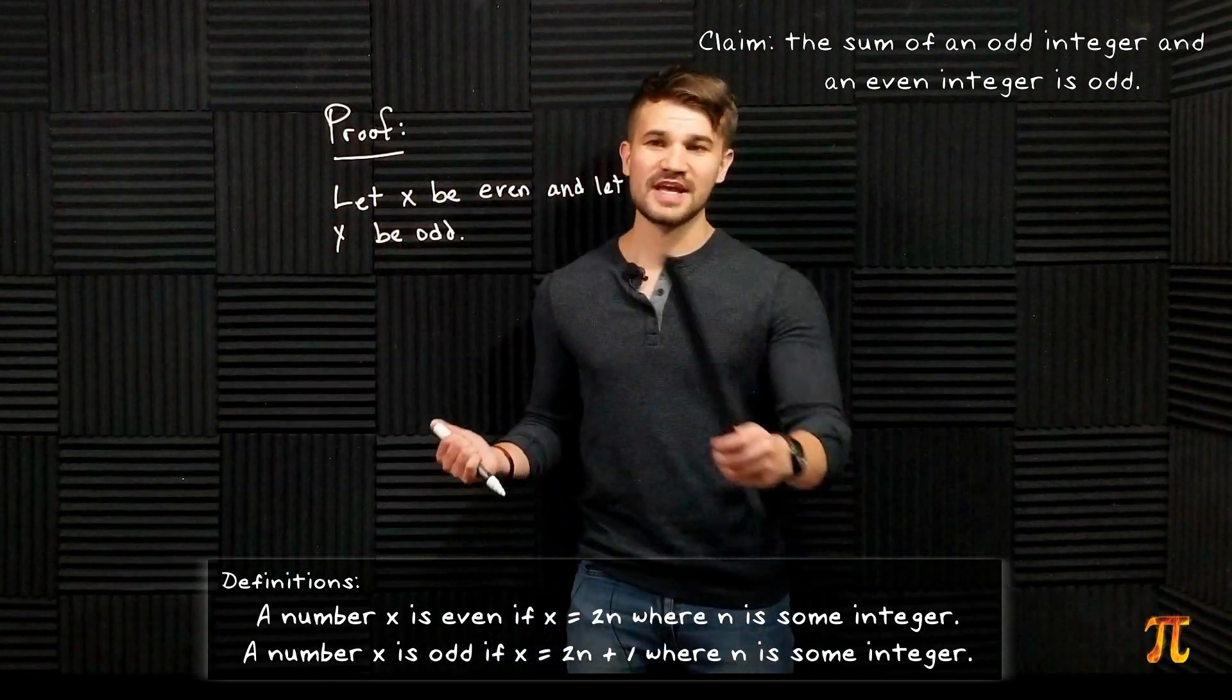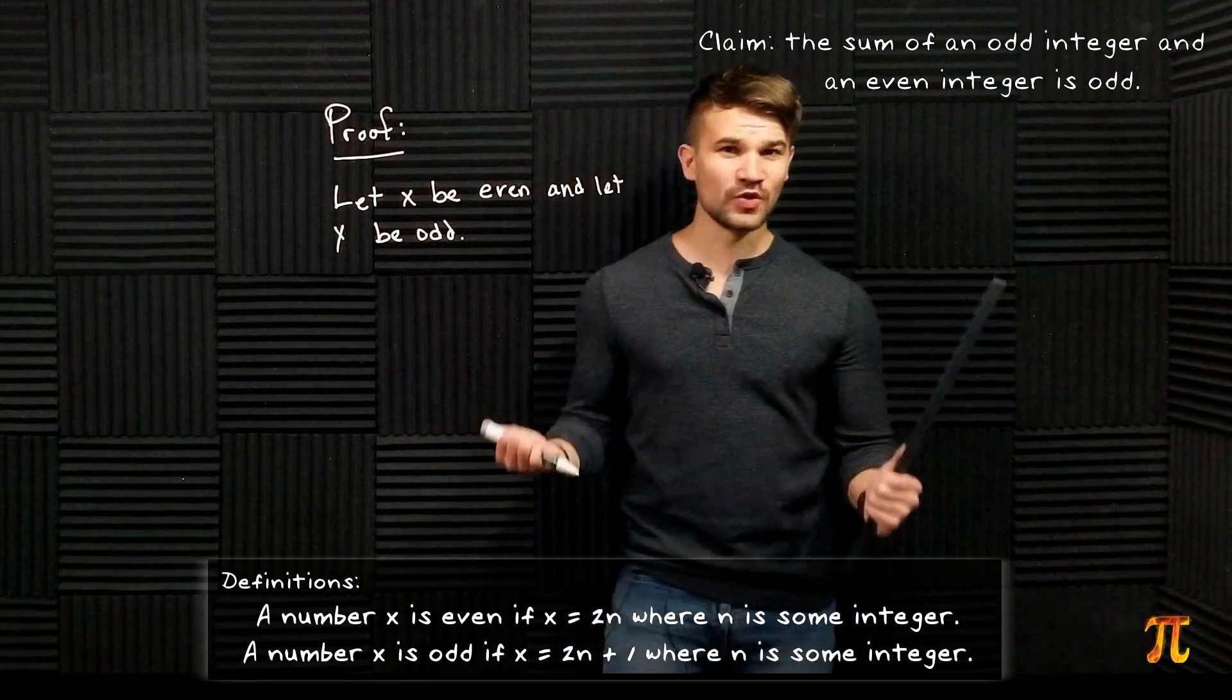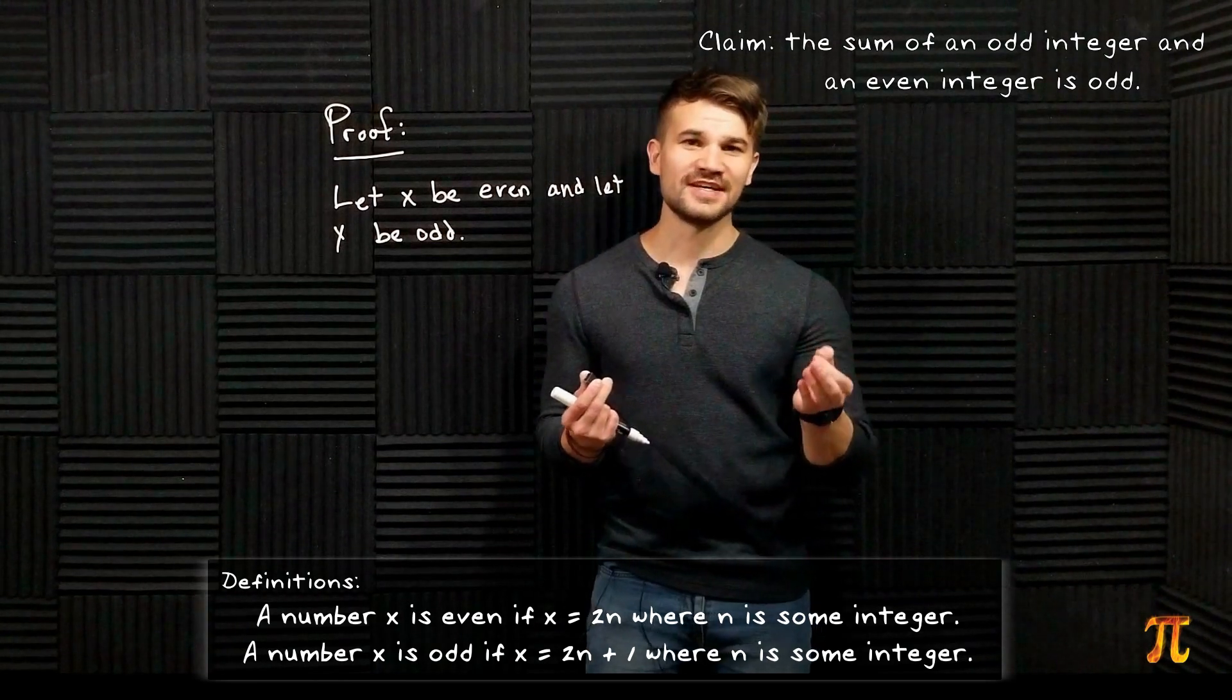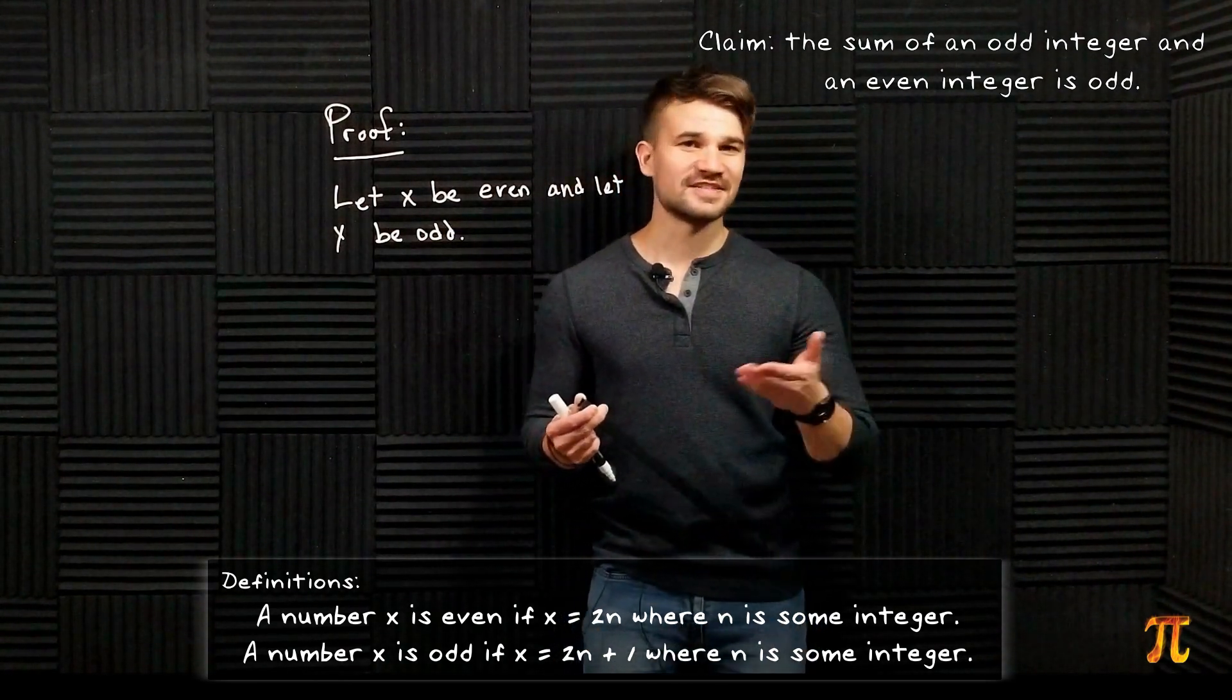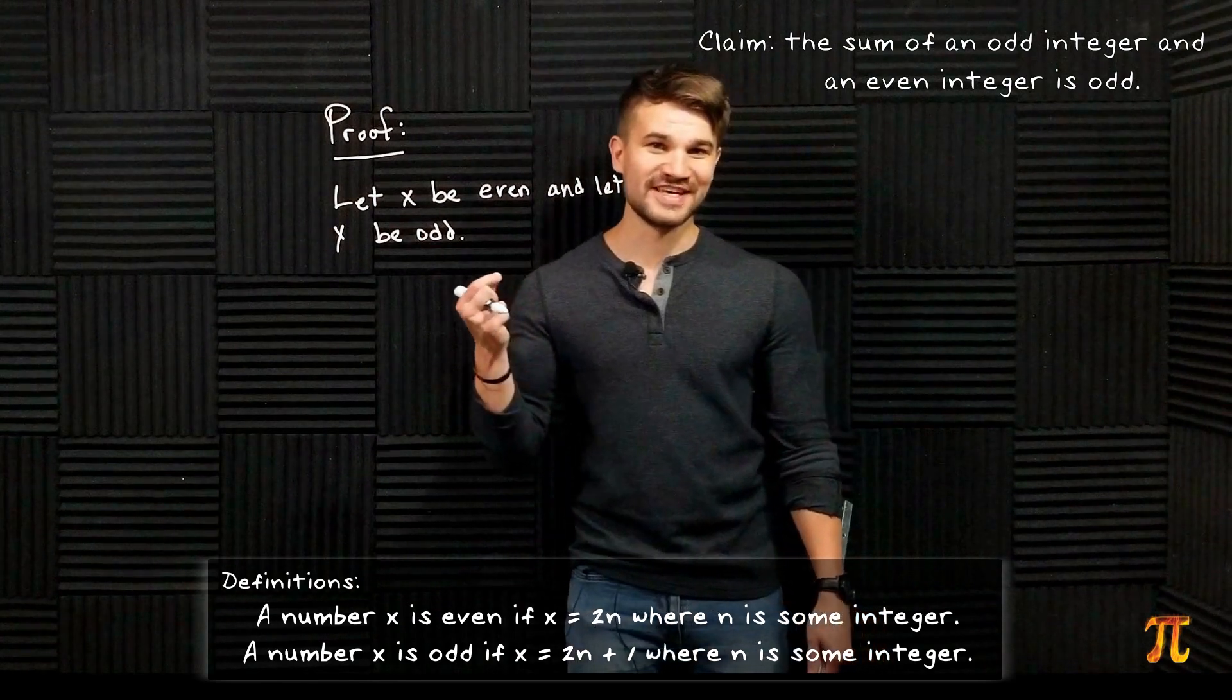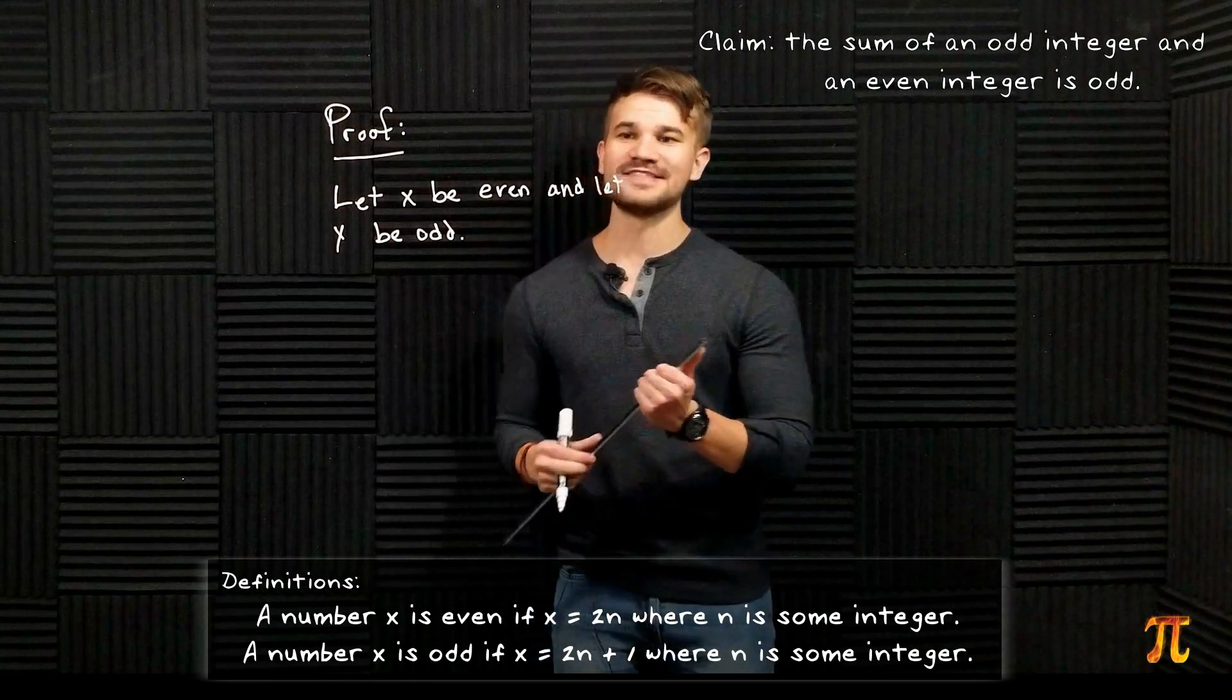The fact that I'm picking x to be the even one and y to be the odd one does not matter - it's just a choice. Usually when we're writing a proof and we make a choice like that that doesn't actually affect the reasoning of it, we say without loss of generality. It means this choice I'm making doesn't actually affect anything - if you made the other choice everything would be the same way. So by definition there's an integer n such that x is equal to 2n and an integer m such that y is equal to 2m + 1.